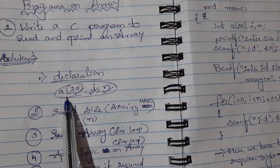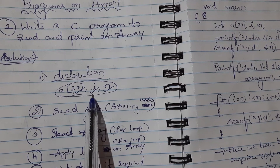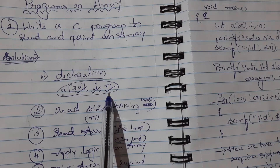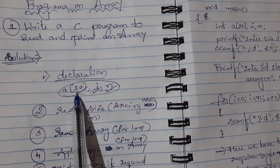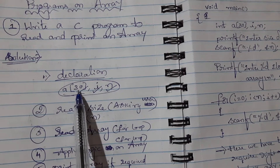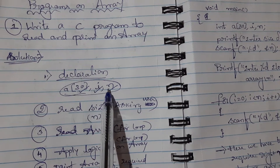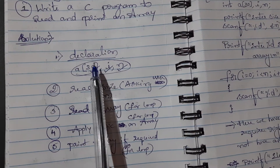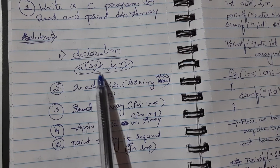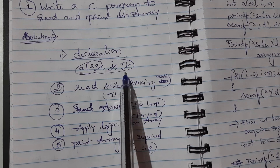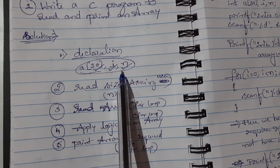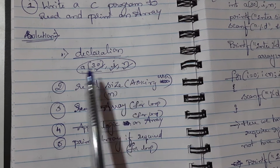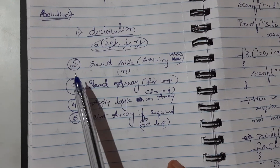Whenever you declare an array, along with that array you also need an index variable 'i' and a size variable 'n'. The size 'n' is the actual number of elements the user is going to use out of the allocated memory. So the clear picture is: array, along with index variable and size variable — this is common for all array programs.